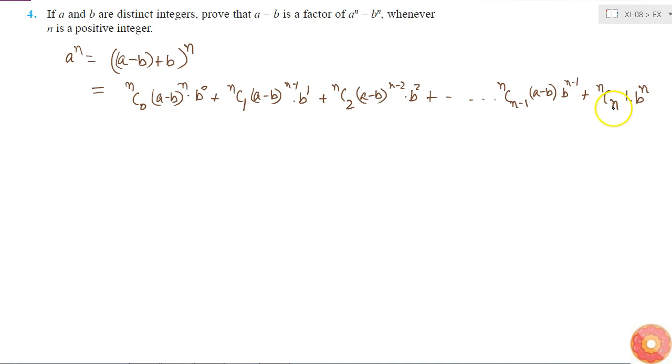So I know nCn is 1. So this entire term will be simply b power n. So if I bring b power n to the left hand side, I will get a^n minus b^n is equal to nC0, sorry, (a-b) to the power of n...